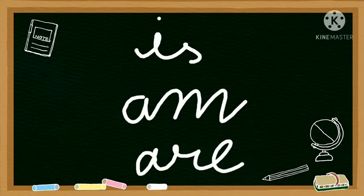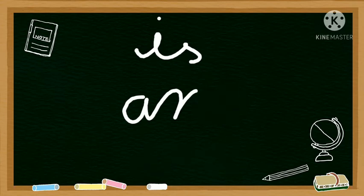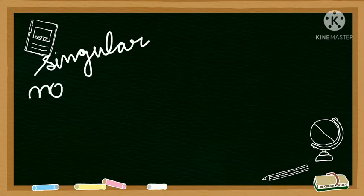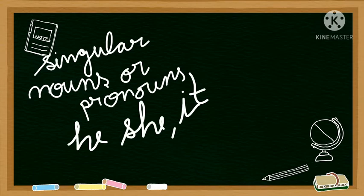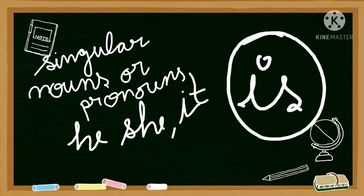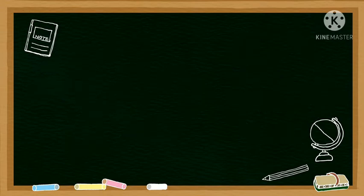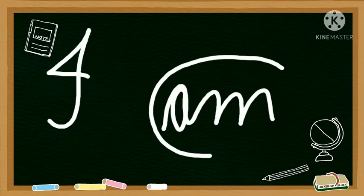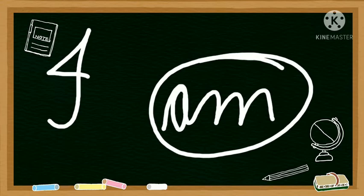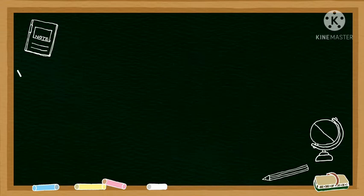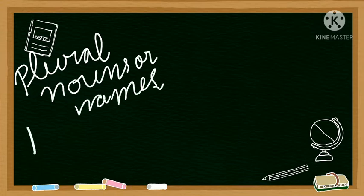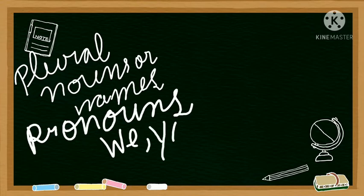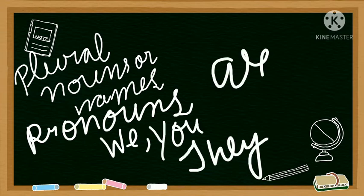Do you remember how we use IS, AM, ARE? Let me give you a short recap. Whenever we talk about any singular nouns or names or pronouns like he, she, it, we should use IS with them. Now the next rule: whenever we use the personal pronoun I, we should use AM with it. Like, I am a teacher. Whenever we use plural nouns or pronouns like we, you, they, we should use the word ARE with them.